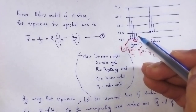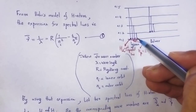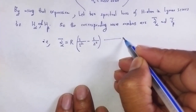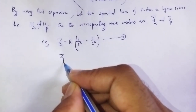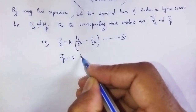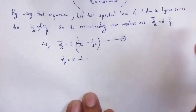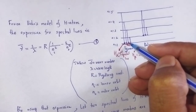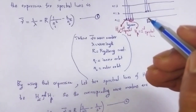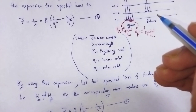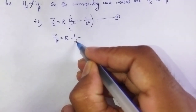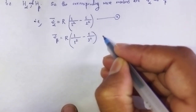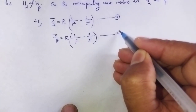Next, nu-bar-beta is equal to the Rydberg constant R times the quantity 1 over 1 squared minus 1 over 3 squared, since for H-beta, nᵢ equals 1 and nₒ equals 3. This is equation number b.